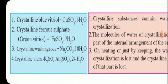Crystalline ferrous sulfate is called green vitriol. It has the molecular formula FeSO₄·7H₂O — 7 water molecules of crystallization. Crystalline washing soda is Na₂CO₃·10H₂O — 10 water molecules of crystallization. Crystalline alum has the formula K₂SO₄·Al₂(SO₄)₃·24H₂O.